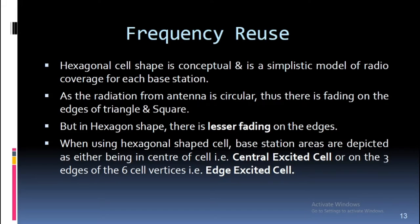Cell geometry: The hexagonal cell shape is conceptual and is a simplistic model of radio coverage for each base station. As radiation from an antenna is circular, there is fading on the edges of triangle and square cells, but in hexagonal shape there is lesser fading on the edges. When using hexagonal shaped cells, base station areas are depicted as either being in the center of the cell (central excited cell) or on the three edges of the six cell vertices (edge excited cell).